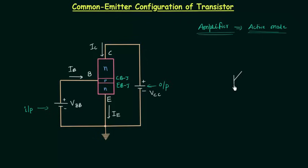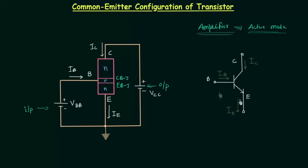I will quickly draw the symbol of the transistor. We are using an NPN transistor, so the arrow will be like this. In common emitter configuration, the emitter is common to the input and the output side. This is the emitter terminal, this is the collector terminal, and this is the base terminal. In common emitter configuration, the input current is IB and the input voltage is VBE.